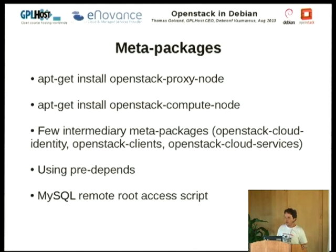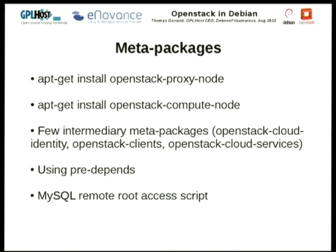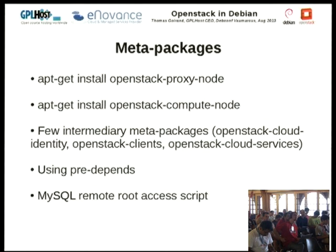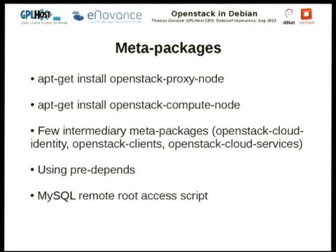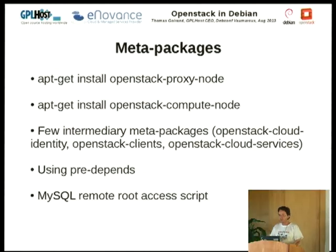There's also a meta-package so you can install everything at once. A common setup is a controller node that controls all your cloud, plus multiple compute nodes. When you install the OpenStack compute node meta-package, it sets up Nova Compute running with KVM and Open vSwitch, including the Quantum plugin Open vSwitch agent — which has to run on both the proxy node and the compute node. So it sets all of that up for you without needing to manually select each individual package like Cinder, Glance API, registry, etc.